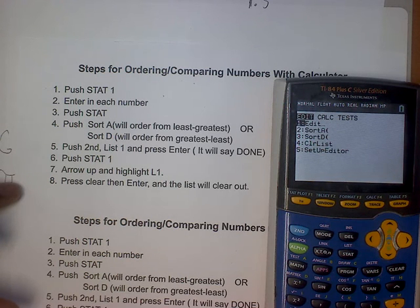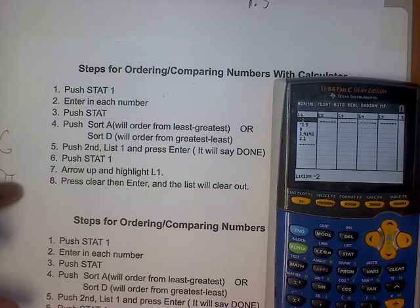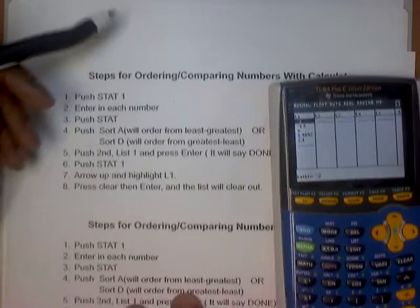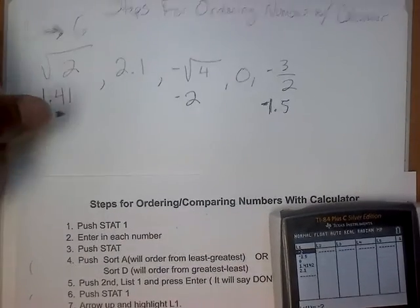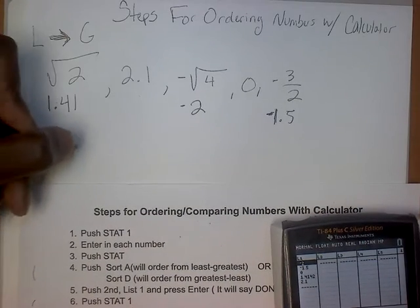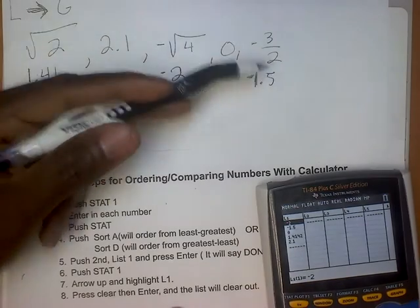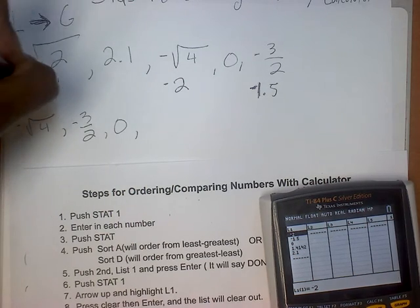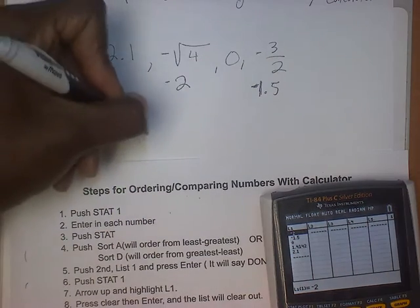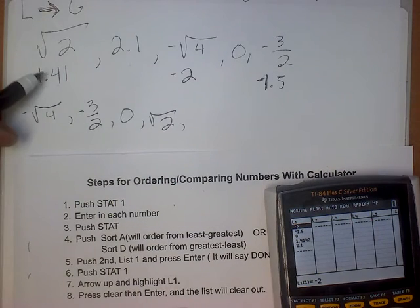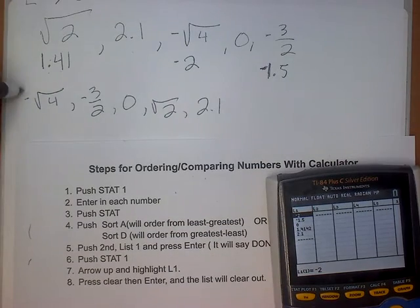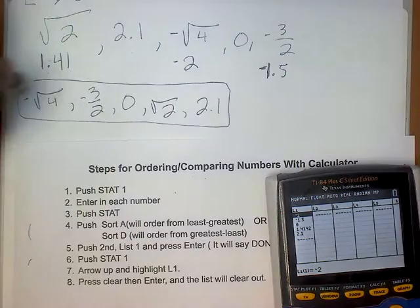Now go back to see if it listed them correctly — press STAT, then 1. Look at that! In order from least to greatest: negative 2 (which is negative square root of 4), then negative 1.5 (which is negative 3 over 2), then zero, then 1.41 (which is the square root of 2). This is why you have to write down what the decimal numbers represent. And lastly, 2.1. There's your answer right there.